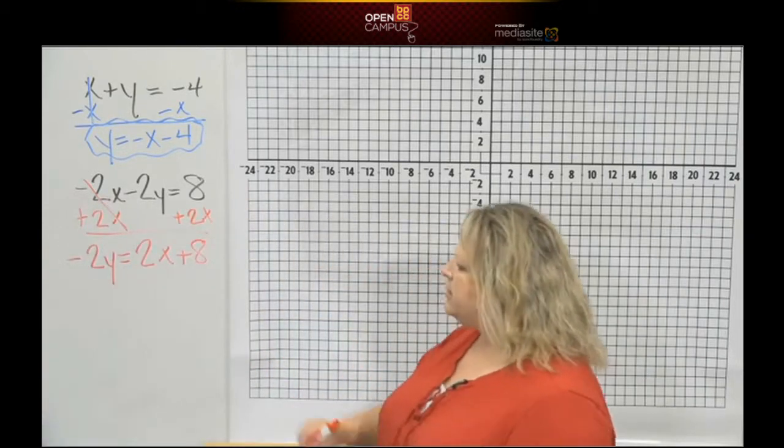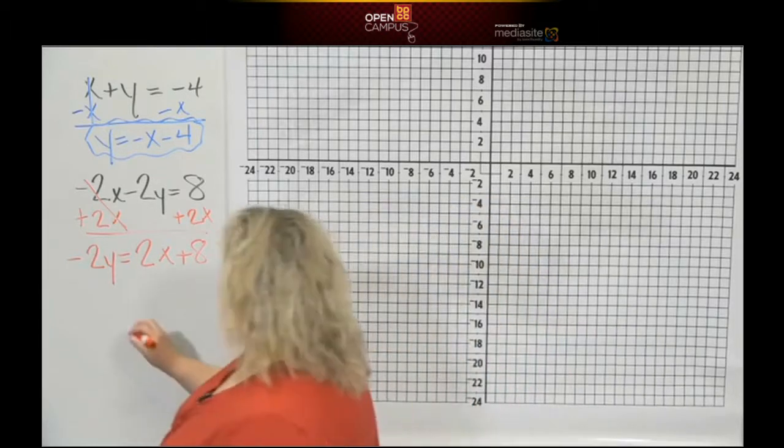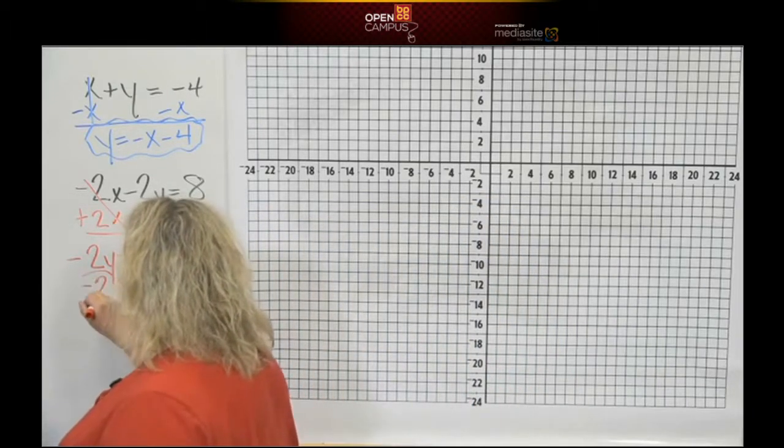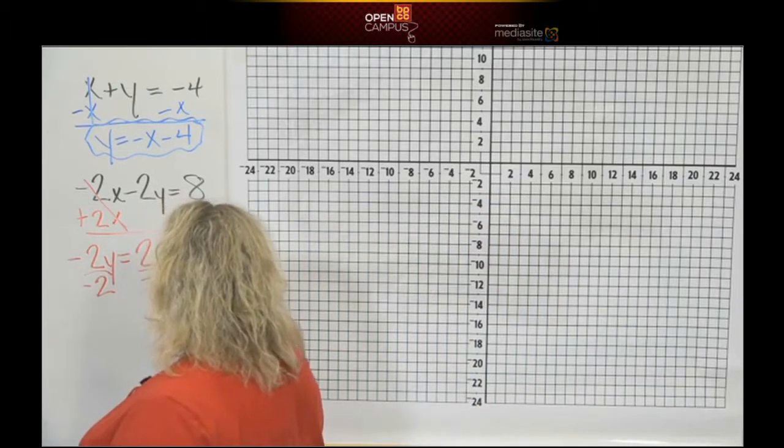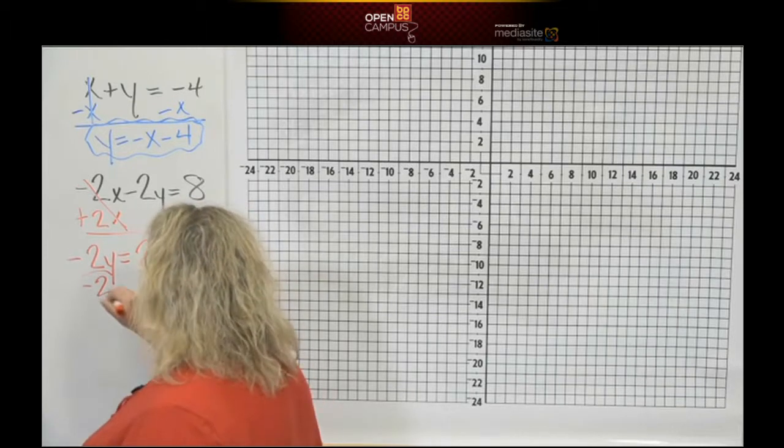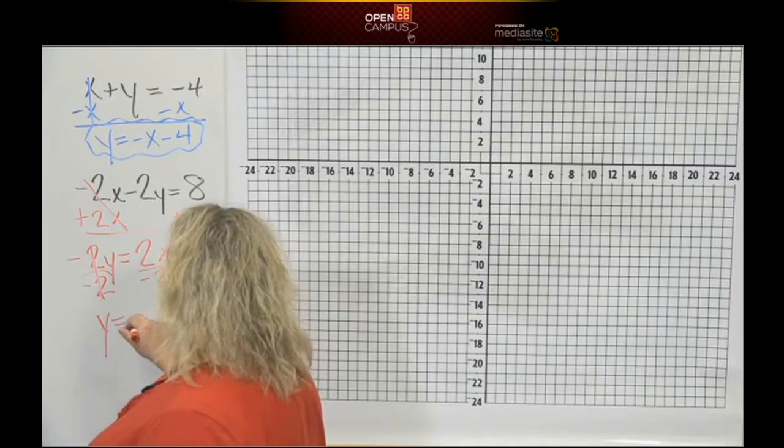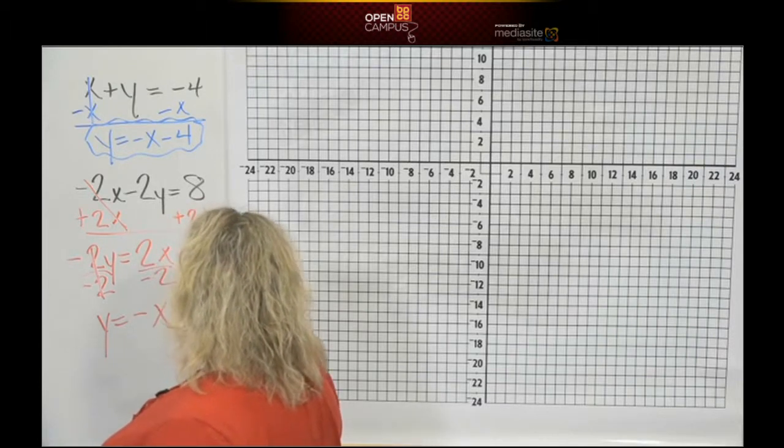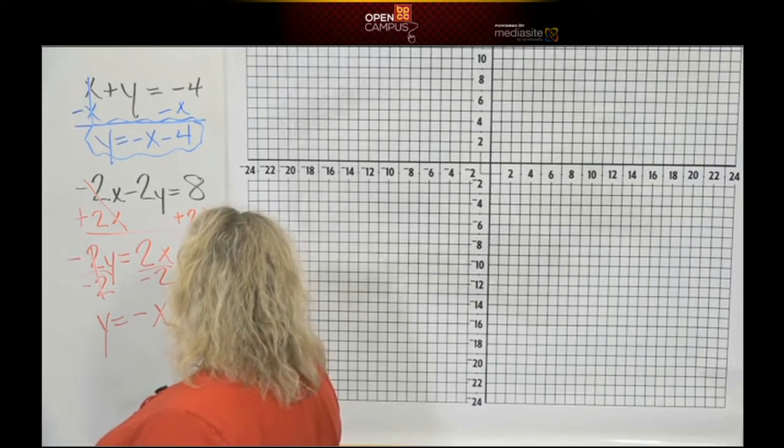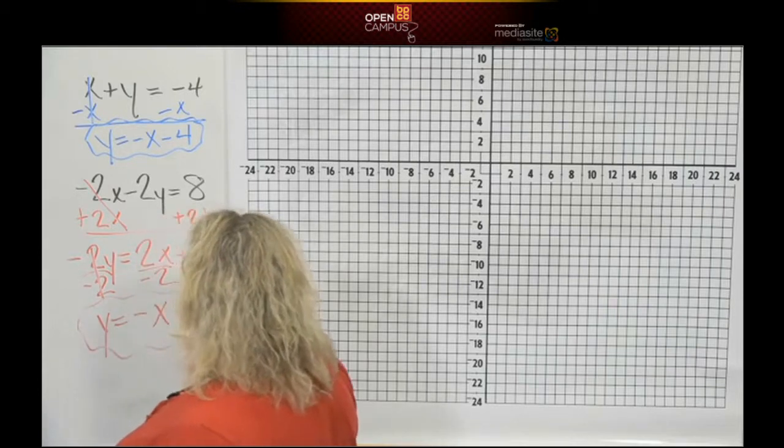And then we're going to divide everything by negative 2 because you have to get the y by itself, so divide by negative 2 across the board there. And that's going to give you y is equal to, a negative divided by a positive is a negative, so that's negative 1x and that's negative 4. And there's that equation.